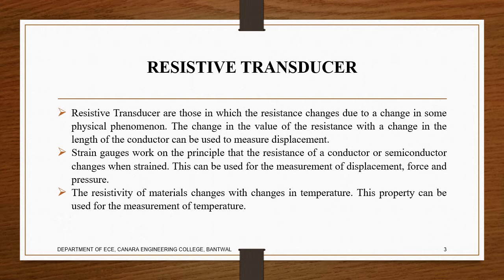Resistive transducers are ones whose resistance changes due to a change in some physical phenomena. This physical phenomena might be a change in the length of the conductor or a temperature increase. Changes in the length of conductors can be used as a measure of displacement. Strain gauges work on the principle that the resistance of a conductor or semiconductor changes when strained, and this can be used for measurement of displacement.